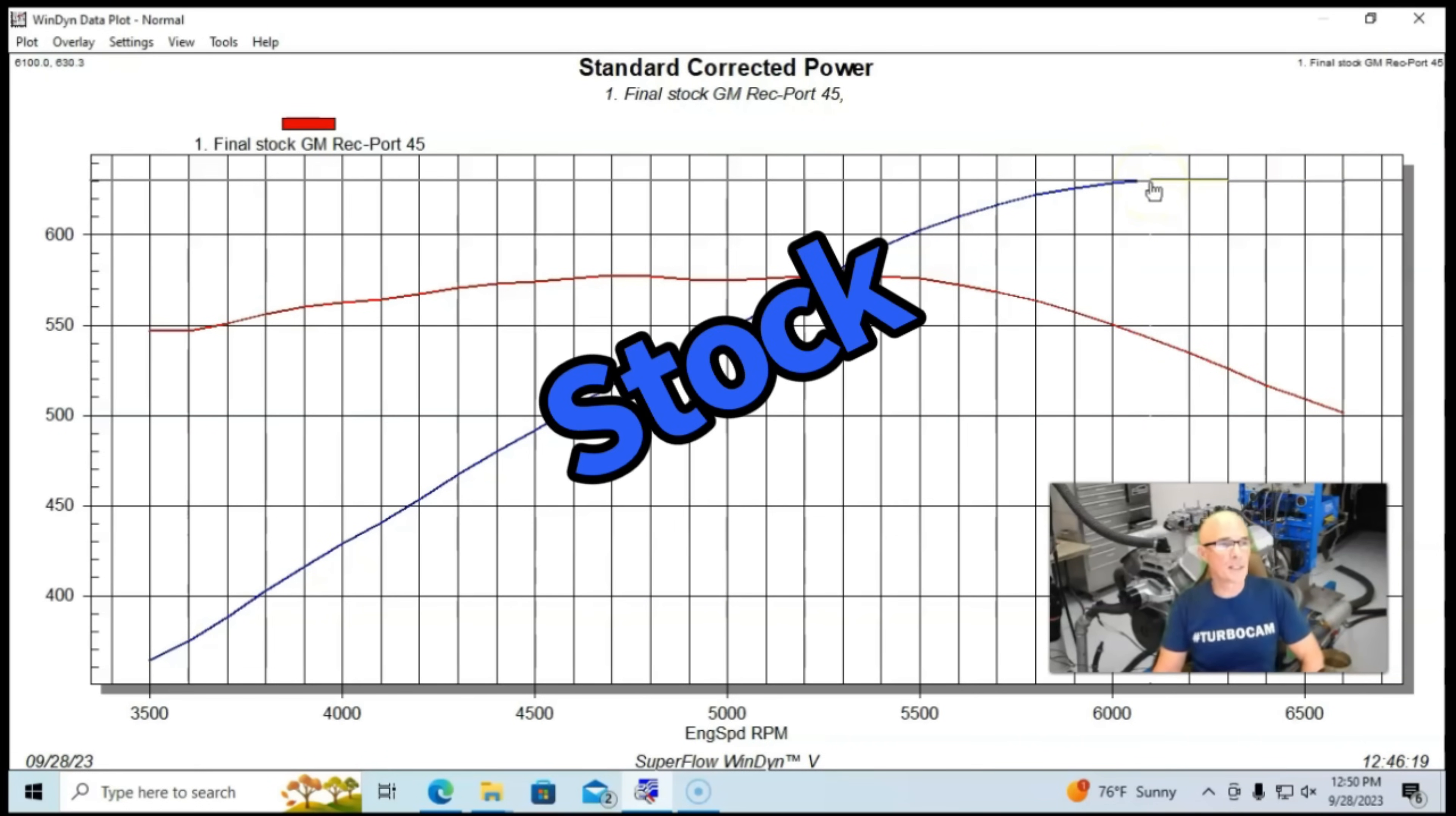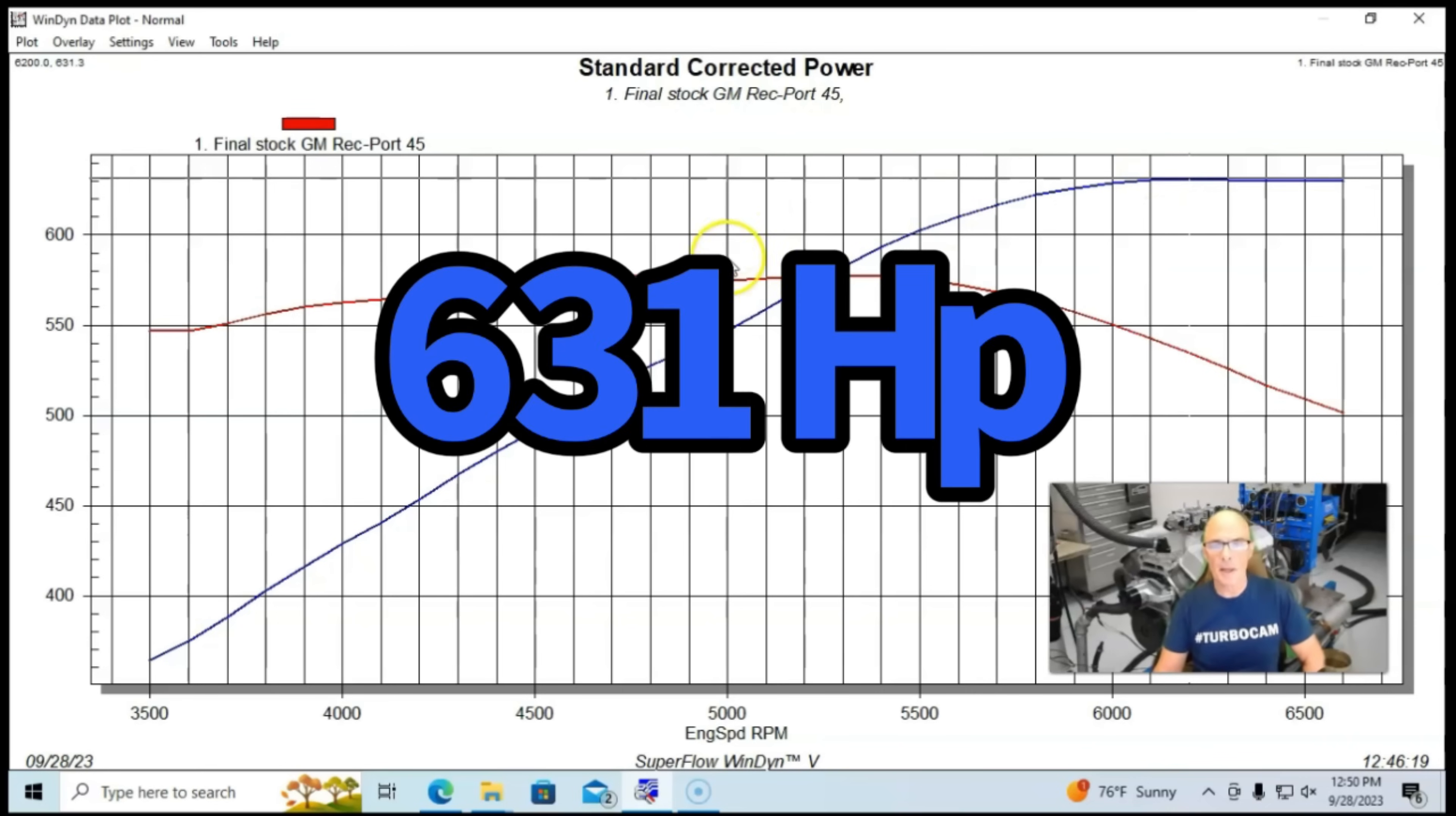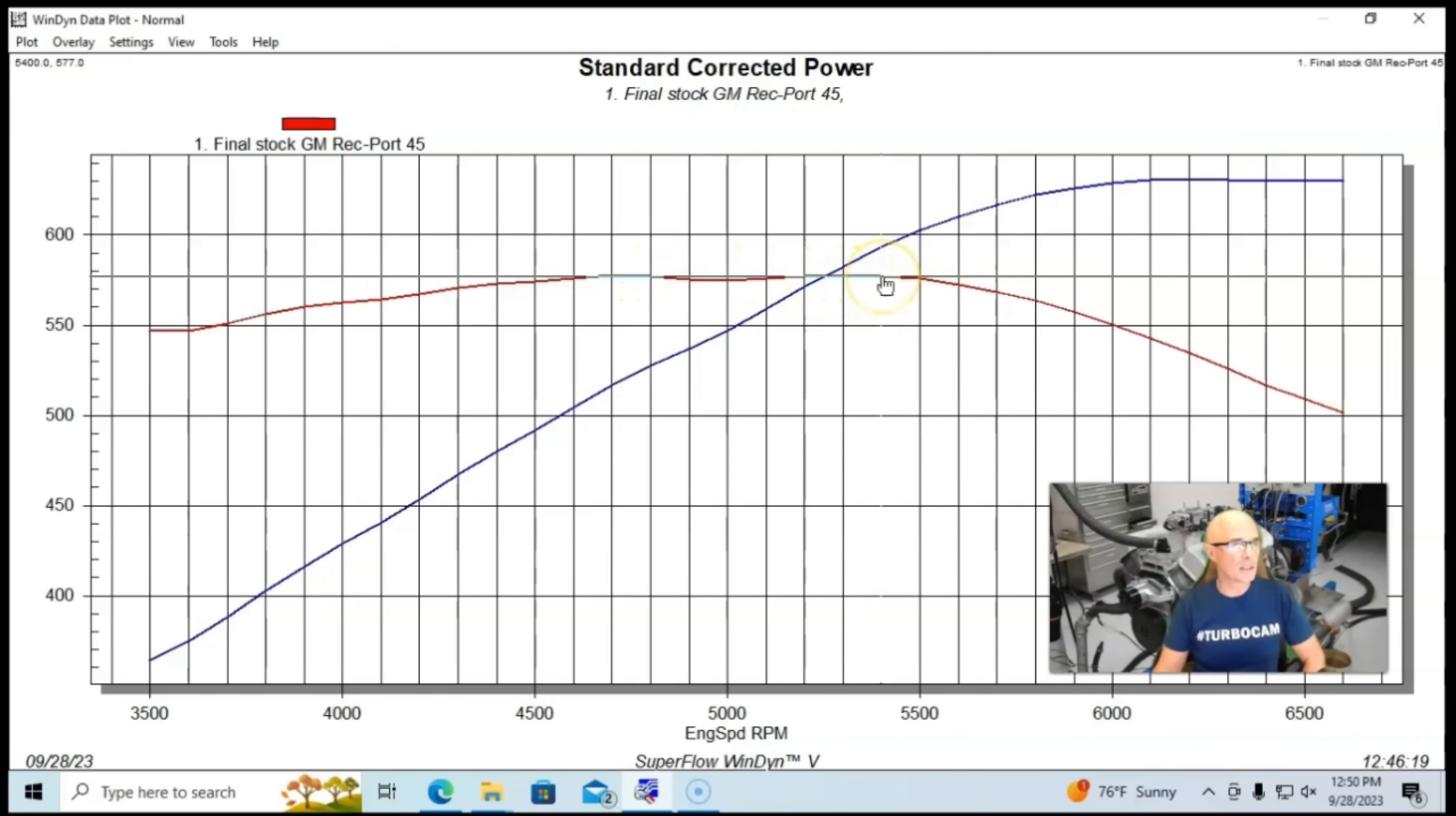Equipped with the factory iron rec port heads, this thing produced 631 horsepower and peak torque checked in at 578 foot-pounds. 578 foot-pounds, good torquey motor, good combination. This would be a lot of fun obviously in anything: a truck, a Chevelle, a Camaro, anything that you want, a boat, anything that you want to put a big block in.